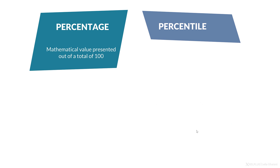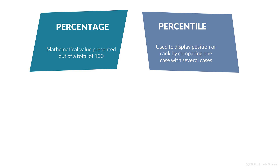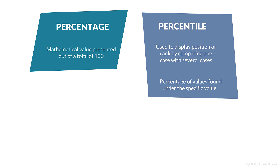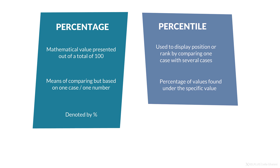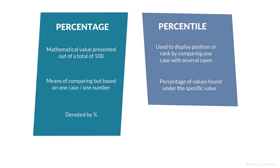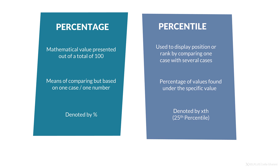Percentage is the mathematical value that you see out of a total of 100, whereas percentile is used to display the position or rank of something by comparing that number to other numbers. It shows you the percentage of values found under a specific value. Percentage is shown by the % sign, whereas percentile is denoted by 'th' — for example, the 25th percentile.